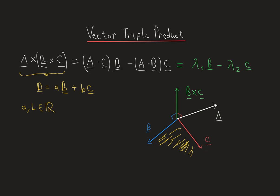This is why the formula for the vector triple product is given in this way. The dot product gives us a scalar, and basically what the formula tells us is that after doing a triple cross product we obtain a vector that can be written as a linear combination of vectors b and c.